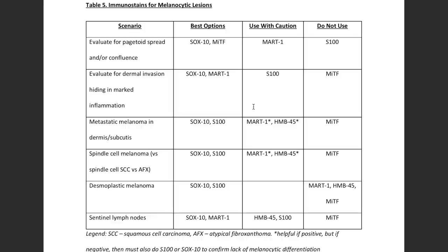Even with immunostains, the most important feature in the vast majority of melanocytic lesions is the histologic pattern — the basic pattern on H&E. Immunostains are great, but they are only an adjunct and H&E is still the king in my opinion. The vast majority of cases of melanocytic lesions can be diagnosed accurately using H&E only. But there are a small subset of challenging cases where immunostains can help us feel more confident about the diagnosis. Don't neglect H&E just because you have immunostains — they can also get you into trouble if you don't know how to use them.